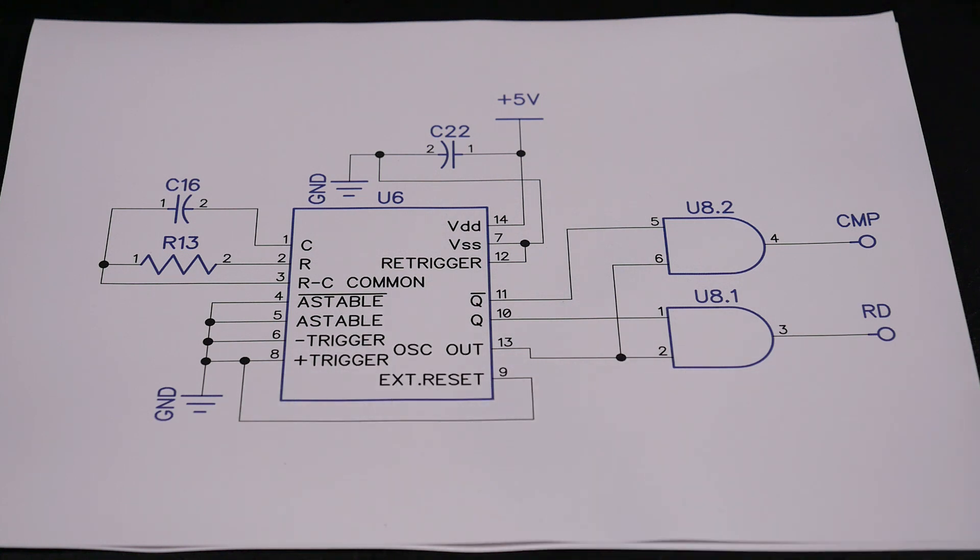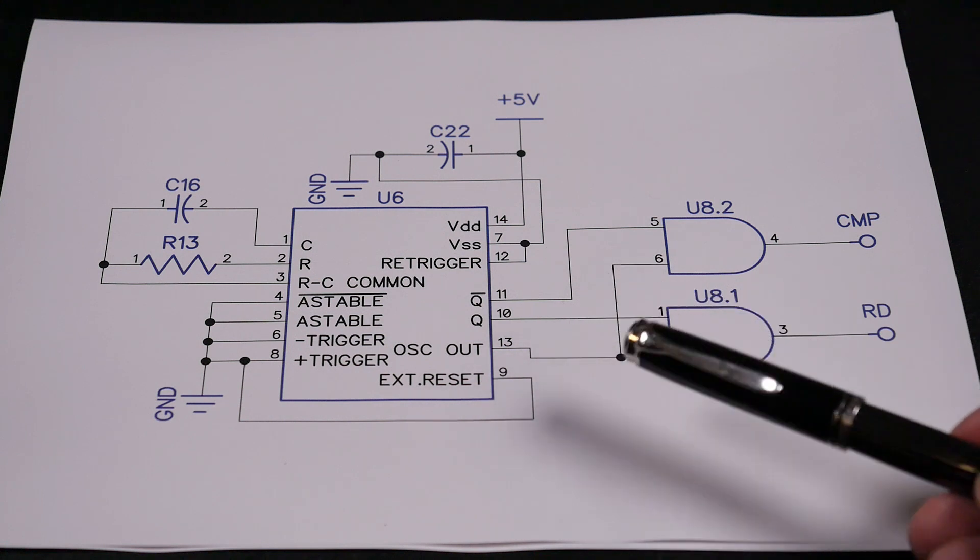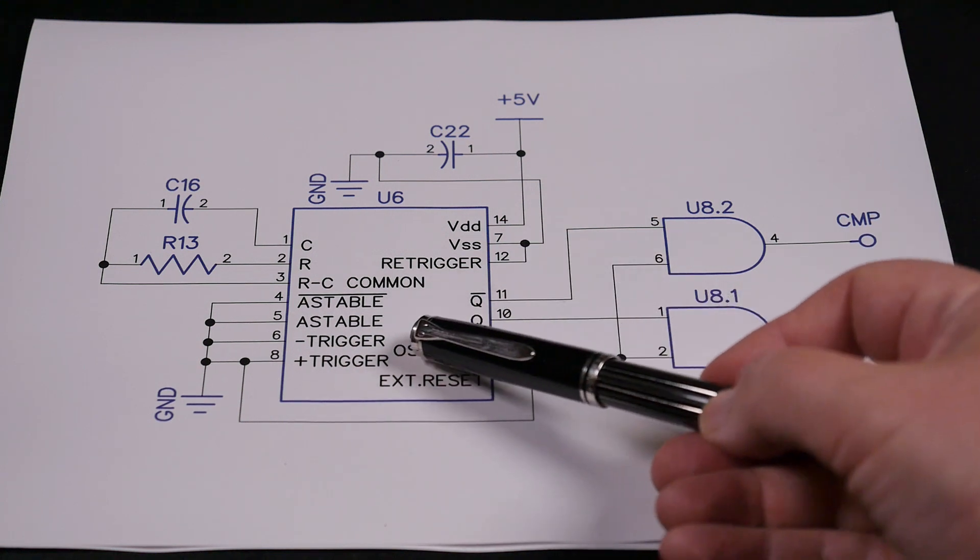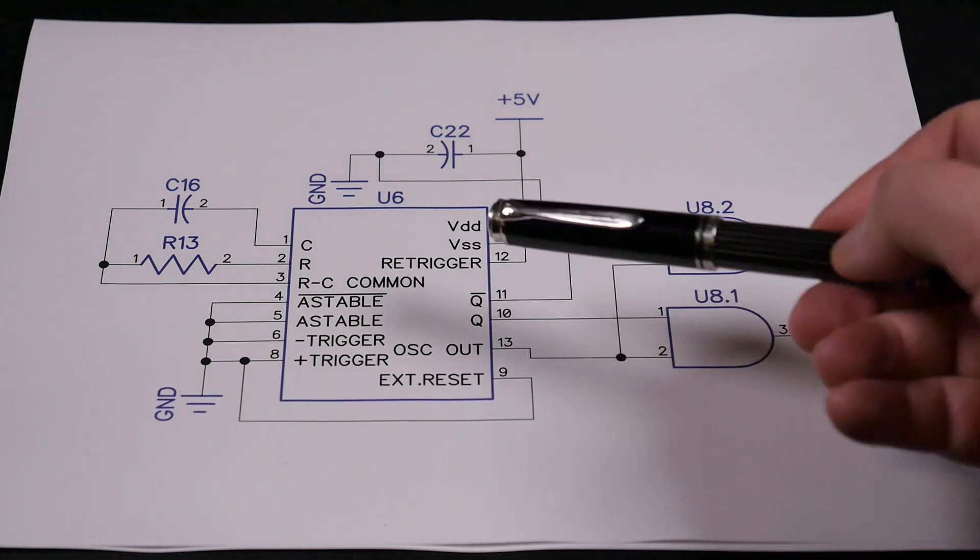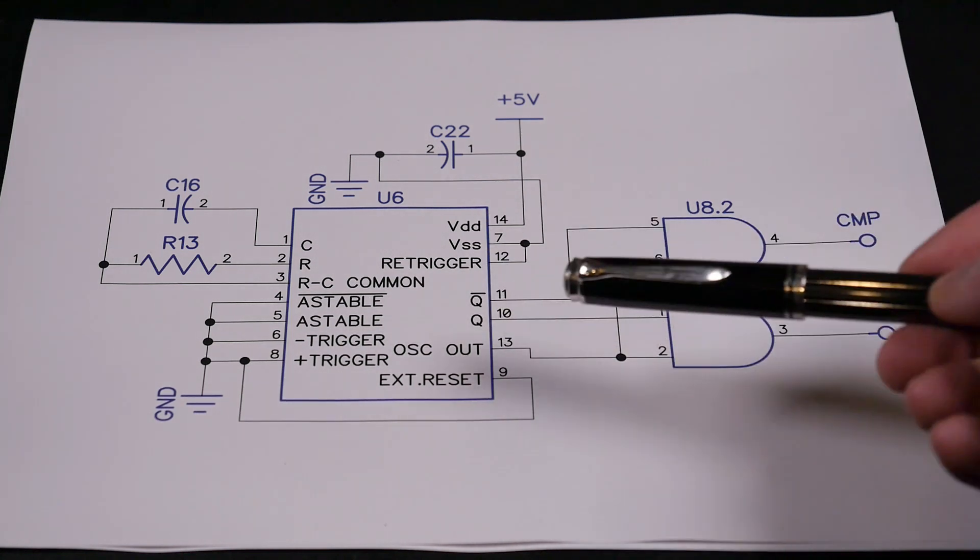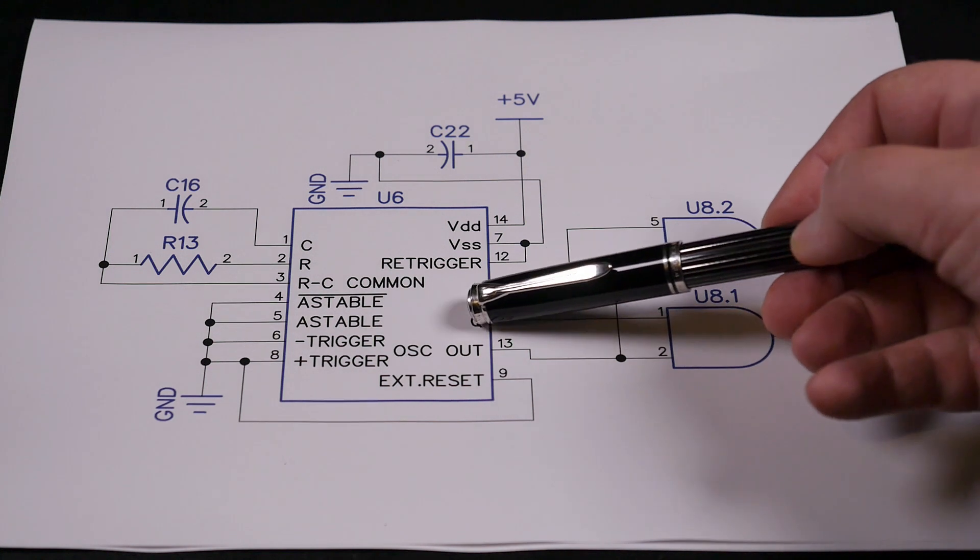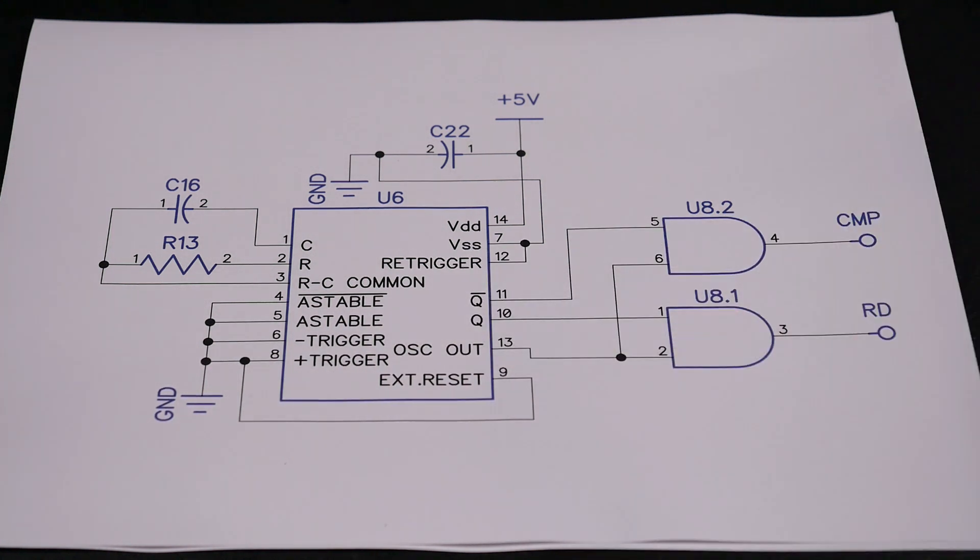Our 4047 clock chip has two kinds of outputs: the oscillator output and the main output with its inverted counterpart. These run at half the frequency of that.